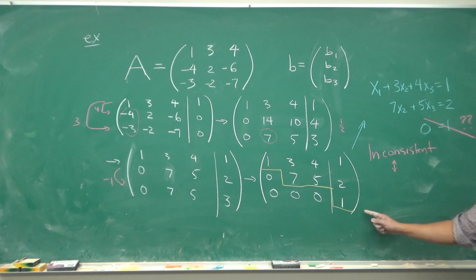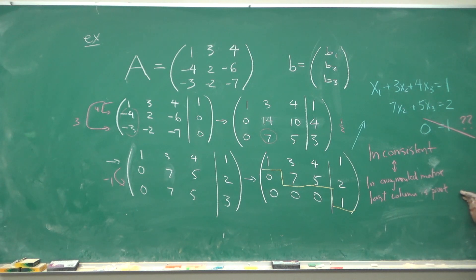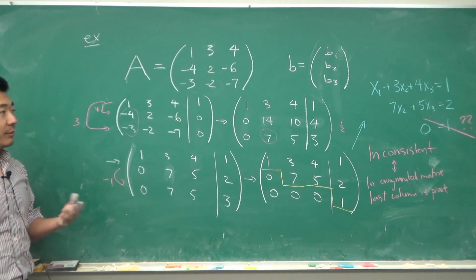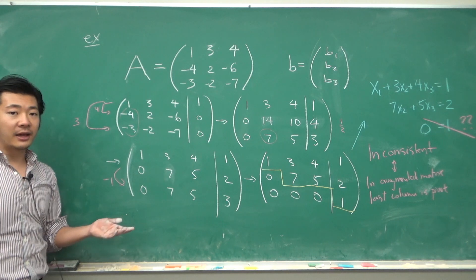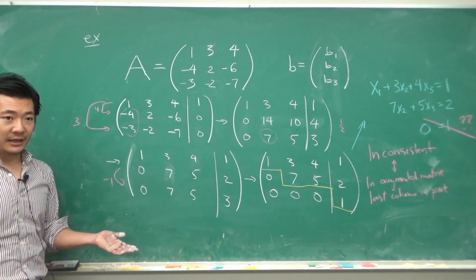Notice that the last column is a pivot column. So in an augmented matrix, when the last column is a pivot column, then it is an inconsistent system. But the theorem is not saying that we can never solve the system.